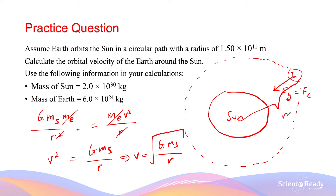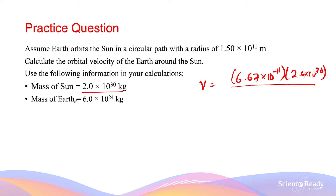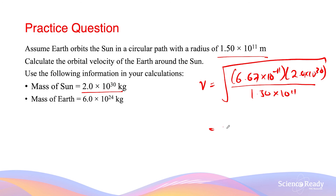The distance r is given as the orbital radius in the question. Using the orbital velocity formula, it's very important to use only the mass of the Sun — not the mass of the Earth — because the orbital velocity is independent of the mass of the object undergoing the orbit. Dividing by the radius and taking the square root gives approximately 29,821.7 metres per second.